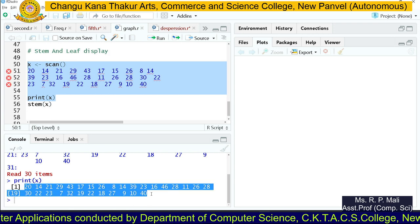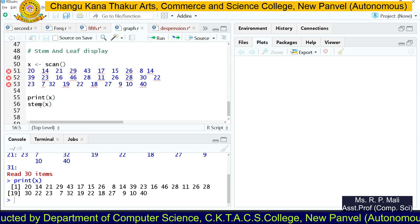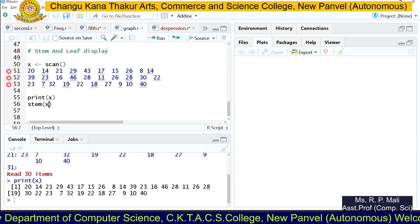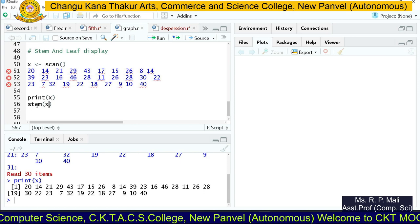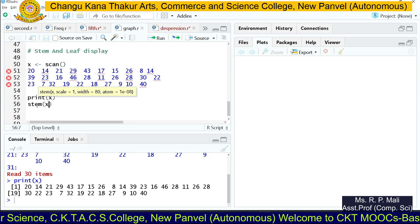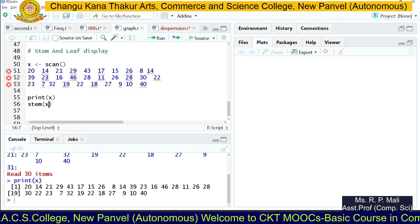R provides an inbuilt function called stem to plot the stem and leaf plot. I'm going to execute the next line. For the stem function, we're going to pass the x variable in which you have stored the values.